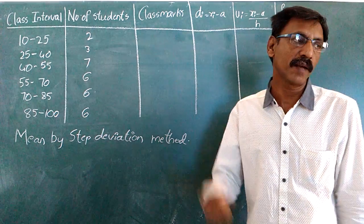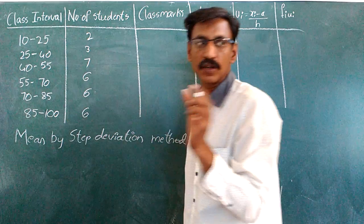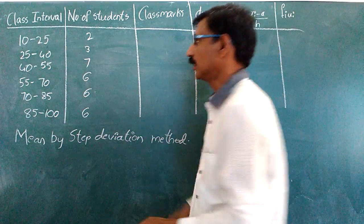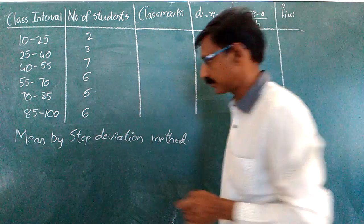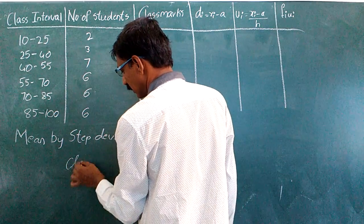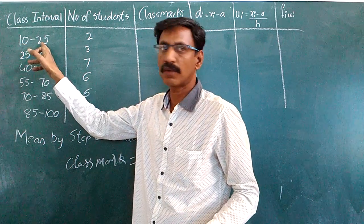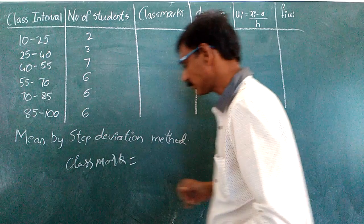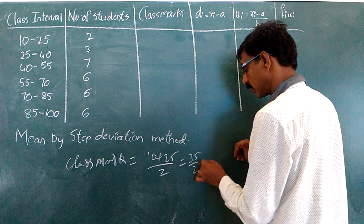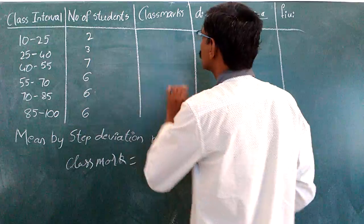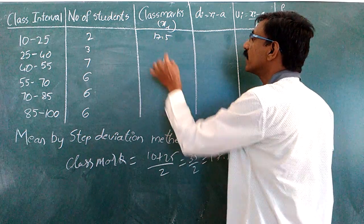The first step is the xi value, which is the middle value of each class. This is called the class mark. The class mark is calculated as the upper boundary plus lower boundary divided by 2. For example, 10 plus 25 by 2 equals 17.5. So this class mark is the middle value of the class.